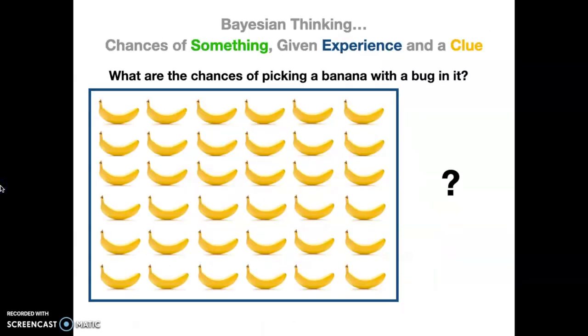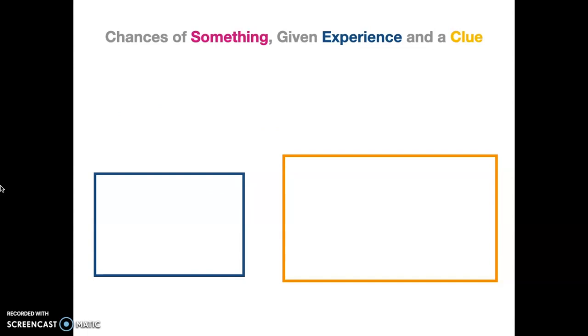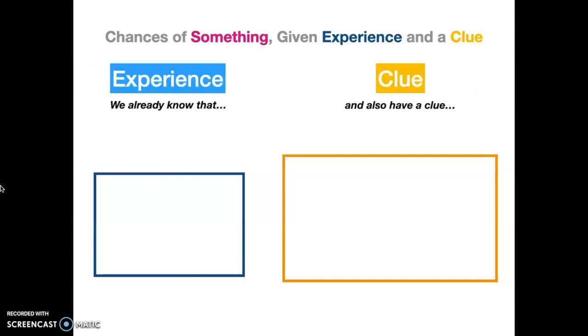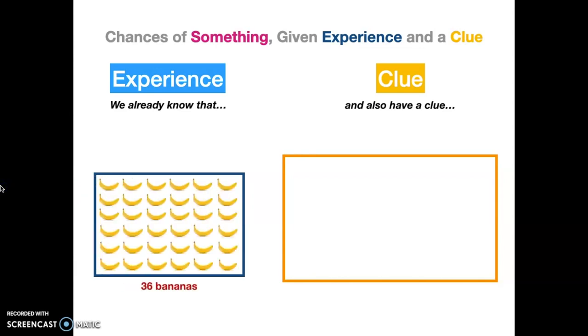Let's talk a little bit more about that later. So what you'd have with Bayesian thinking or Bayesian probability is the chances of something given experience and a clue. We're going to talk about what are the chances of picking a banana with a bug in it given a clue. First off, the chances of something, the something we're measuring is going to be calculated at the end. The experience is what we already know. It's something we know about bugs in bananas. So we already know, starting off, if you have 36 bananas, one of them is going to have a bug in it. Don't question why we know that. That's just for the example here.